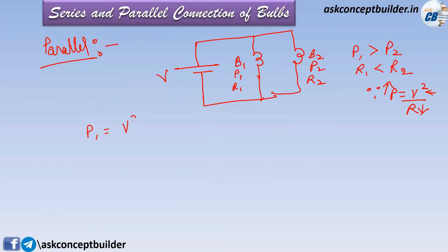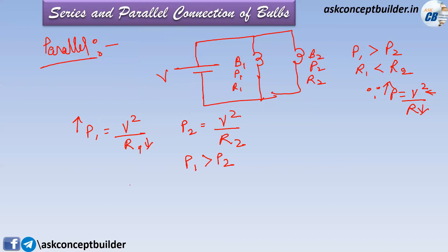Since voltage is constant in parallel, the heat dissipated by bulb 1 will be V² / R1 and by bulb 2 will be V² / R2. Since bulb 1 has lower resistance, the power dissipated by bulb 1 will be higher compared to bulb 2.